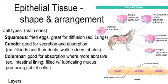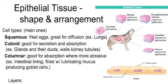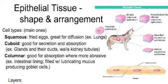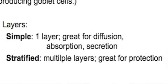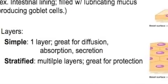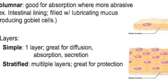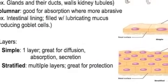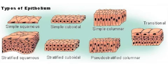Columnar cells are often filled with lubricating mucus-producing goblet cells to further decrease abrasive forces. Epithelial tissue comes in either a single layer — which is great for diffusion, absorption, and secretion — or multiple layers, which are preferred for protection. The single-layered type is called simple, and if made of multiple layers, we use the term stratified.